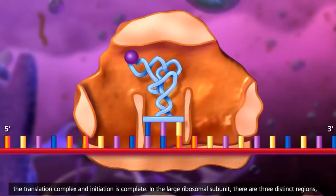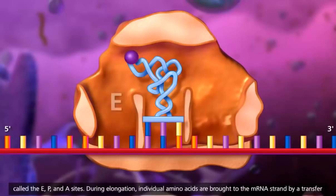In the large ribosomal subunit, there are three distinct regions called the E, P, and A sites.